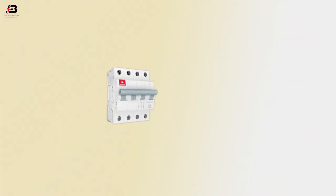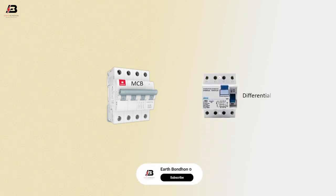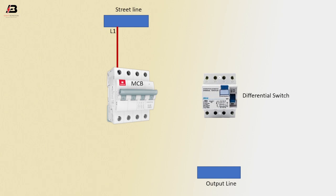Let's start. 4-pole MCB circuit breaker, differential switch, straight line, output line. First phase connection to MCB circuit breaker, second phase connection to MCB circuit breaker, third phase connection to MCB circuit breaker, neutral connection to MCB circuit breaker.